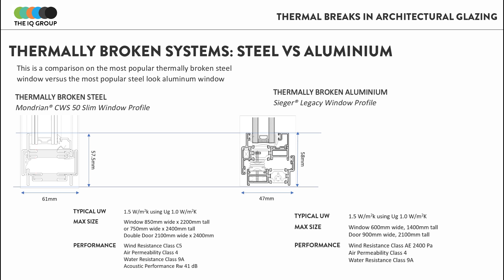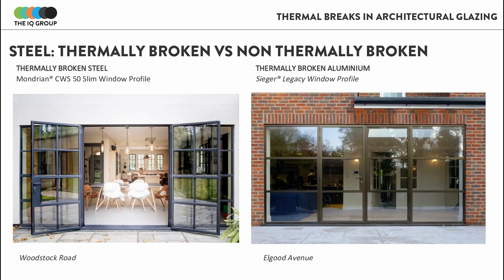The Seager steel-look aluminium option is only 0.5 millimetres bigger in sightline than the alternative steel solution. Looking at a visual comparison of the two systems, there isn't really a huge visual difference between the thermally broken steel and the thermally broken aluminium system.